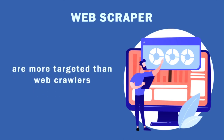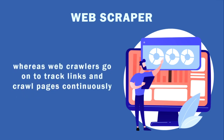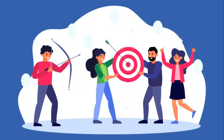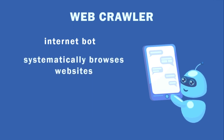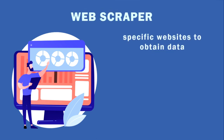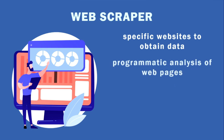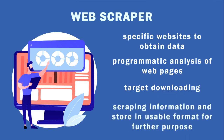For example, you can extract the price of specific products from Amazon or any other e-commerce website. Web scrapers are usually more targeted than web crawlers — the target of web scraping may be only a specific page or a specific website, whereas web crawlers track links and crawl pages continuously. In summary: a web crawler is an internet bot that systematically browses websites for the purpose of web indexing, while a web scraper targets specific websites to extract and store data in a usable format for further purposes, such as programmatic analysis or targeted downloading.